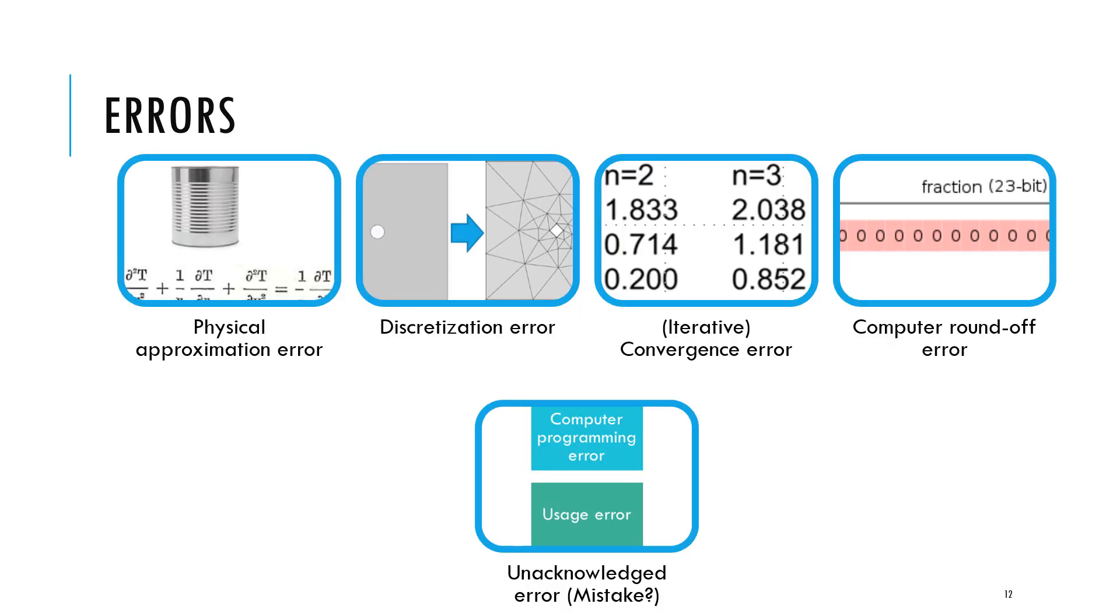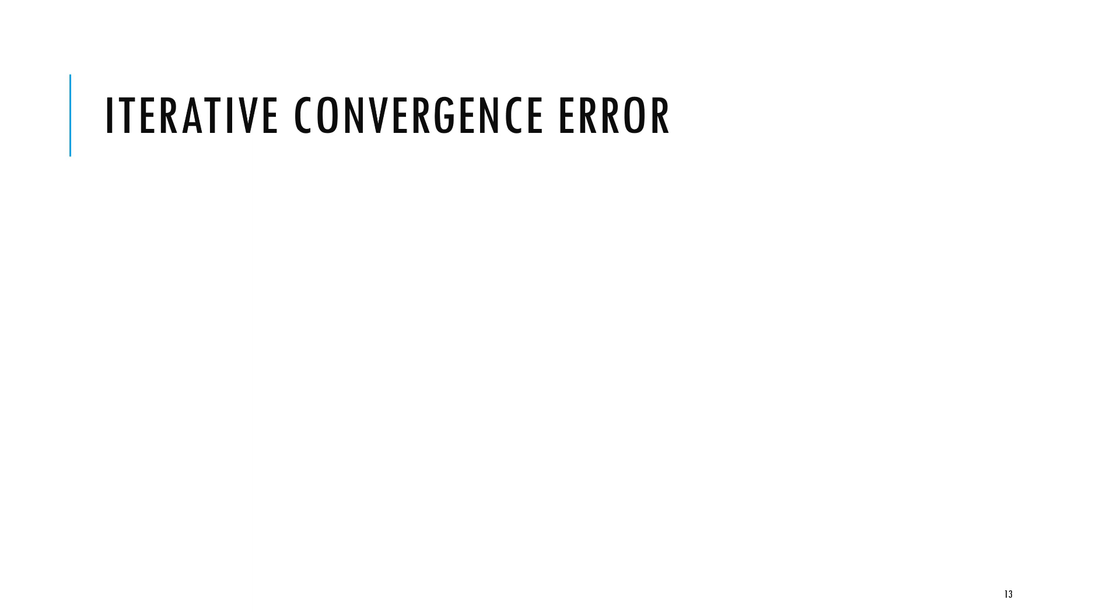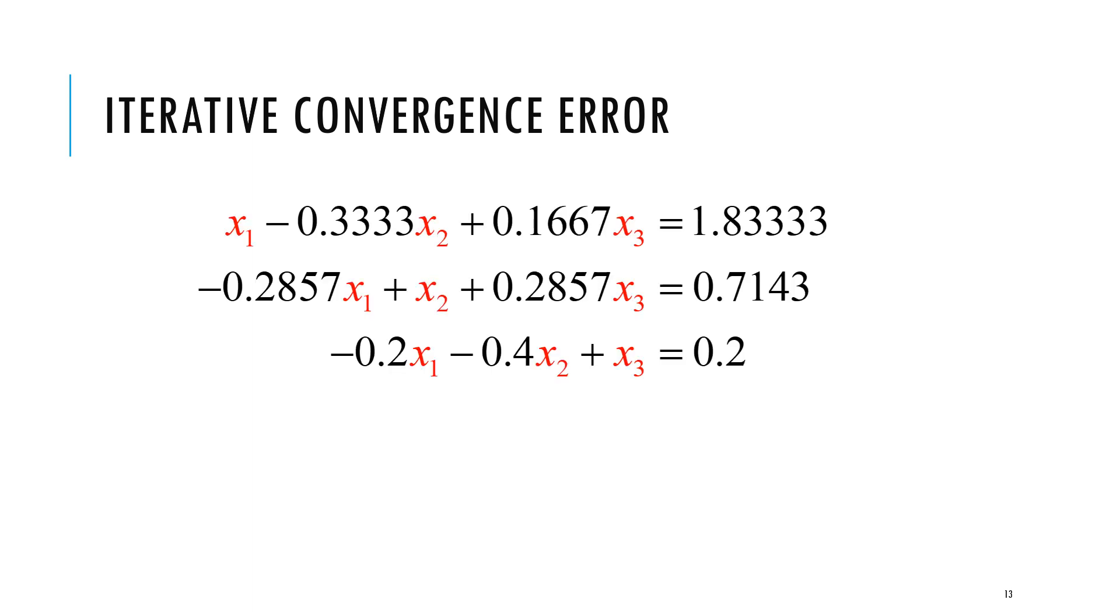Another common error we have in computation is iterative convergence error. What do we mean by iterative convergence error? Let's say we have this set of equations, three equations that we can solve for x1, x2, x3. We can do many different ways. One of the ways is to solve this iteratively, as opposed to directly, that we are used to solving for small systems in earlier classes in college. Instead, we can solve this iteratively because there are benefits for solving them iteratively. It needs less memory, for example.